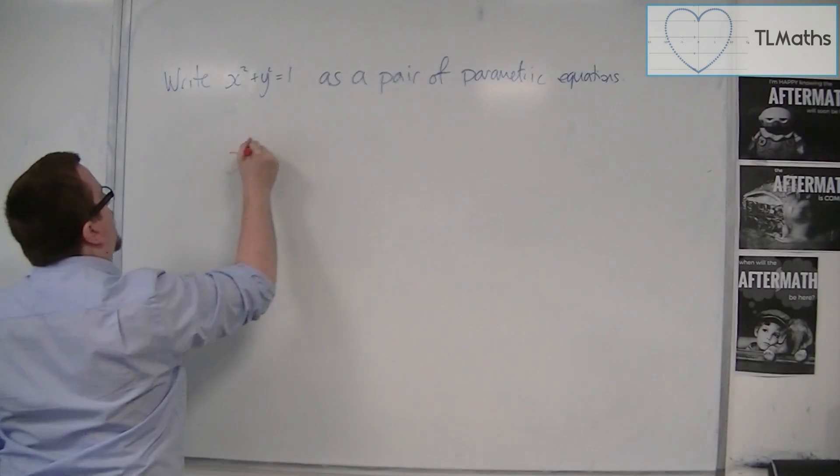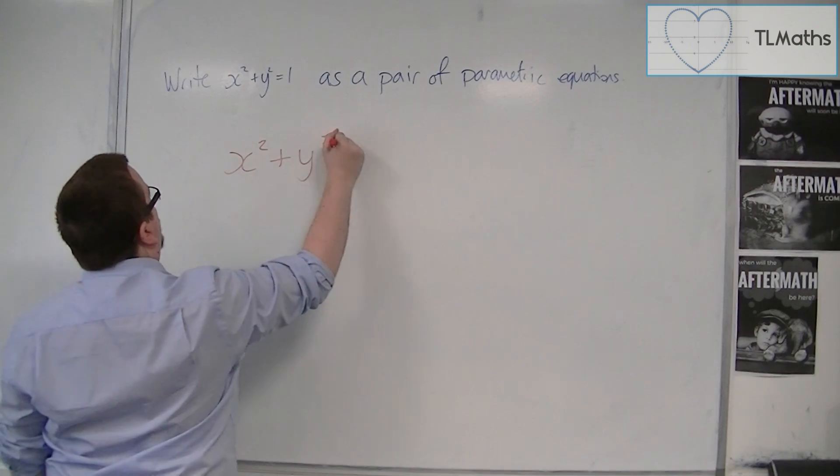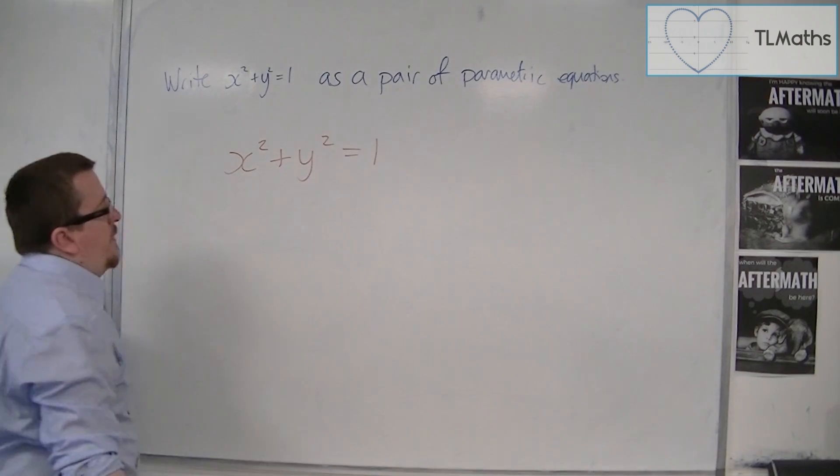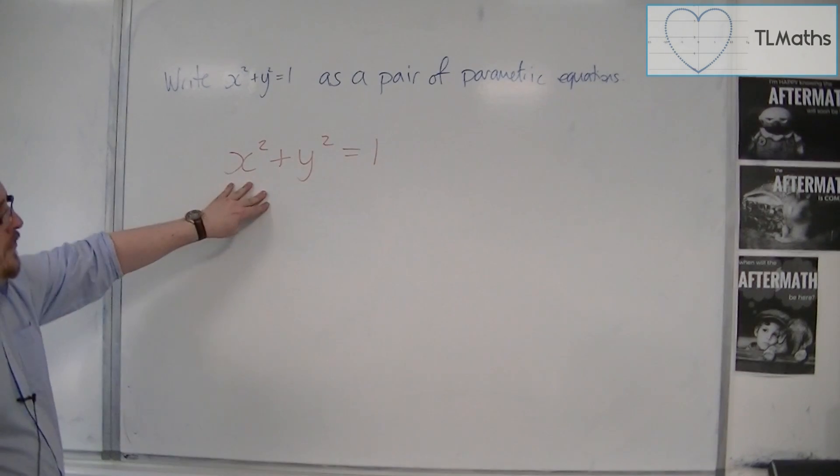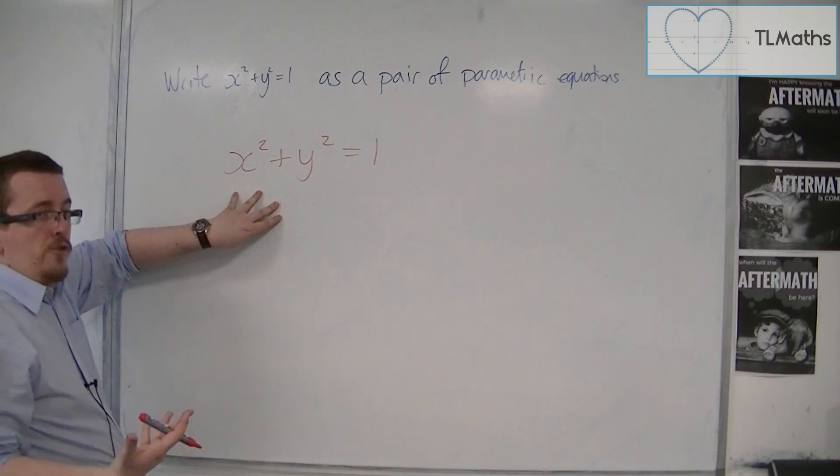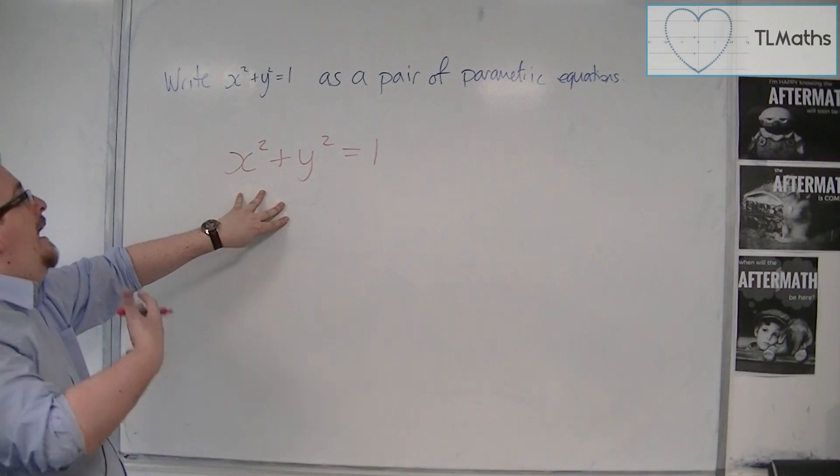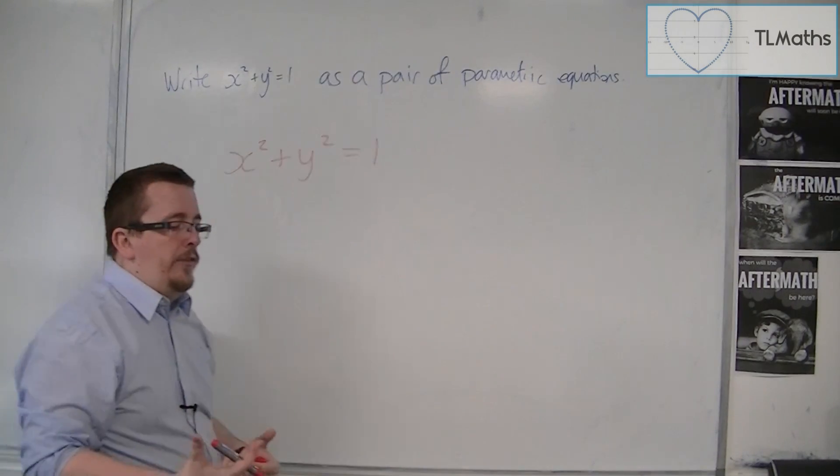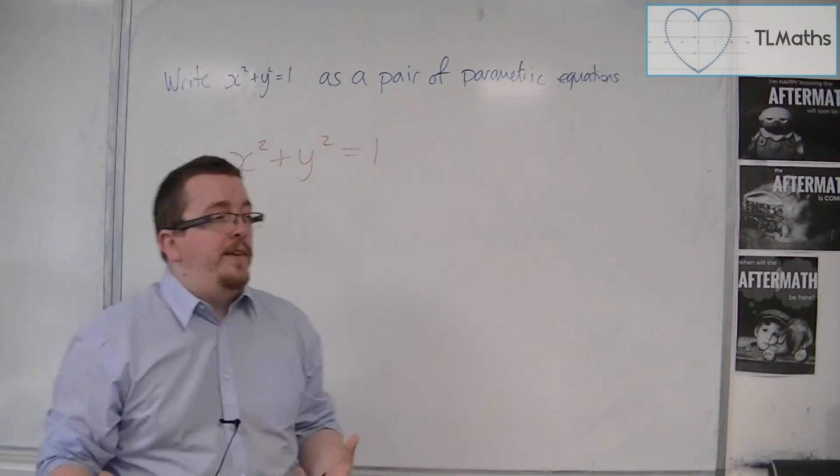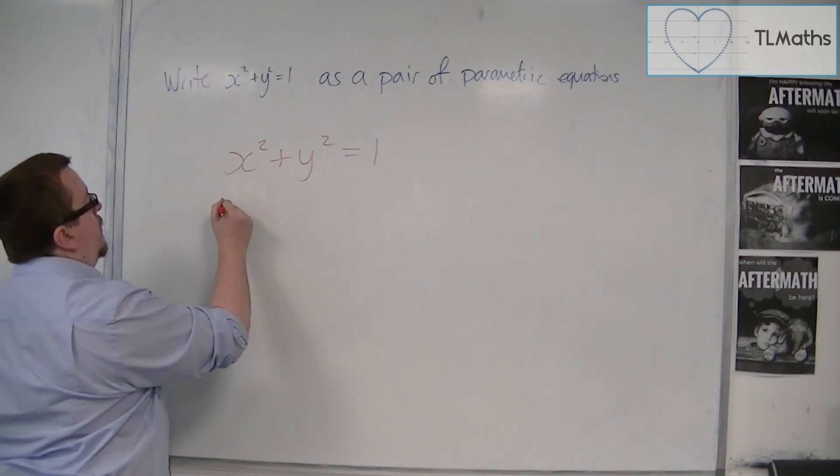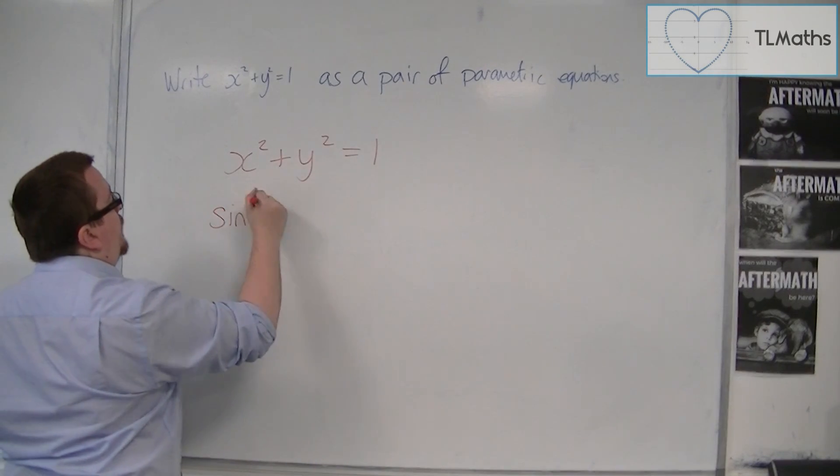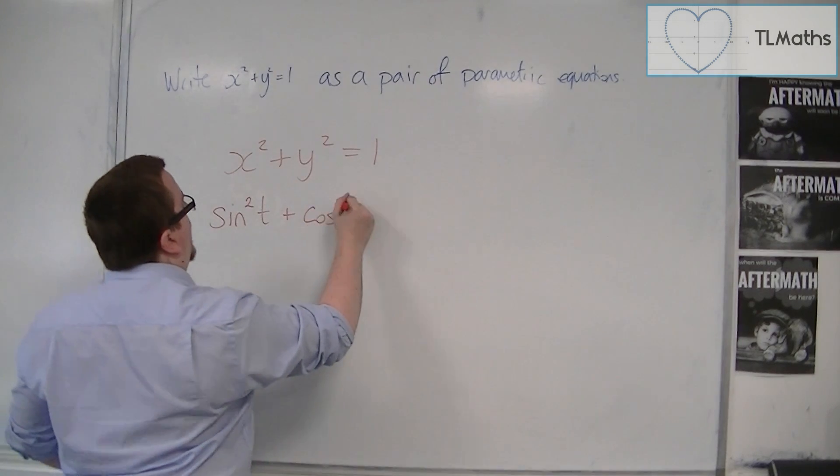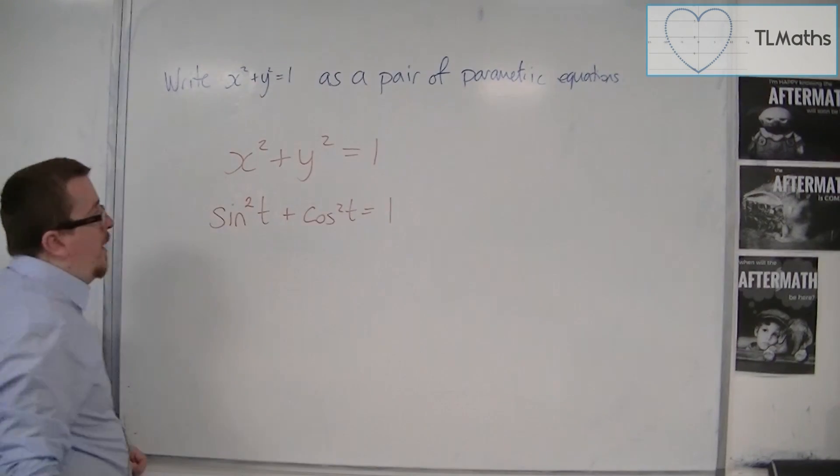Well, if I look at the equation of x squared plus y squared equals 1, then this equation comes from Pythagoras. And it also has direct links to one of the trigonometric identities, which says that sin squared t plus cos squared t is equal to 1.